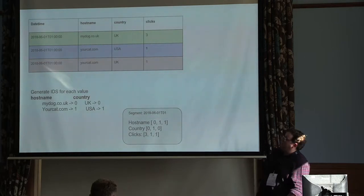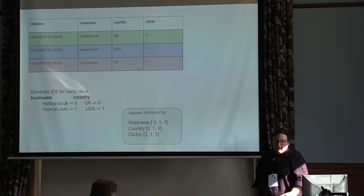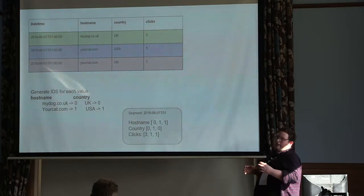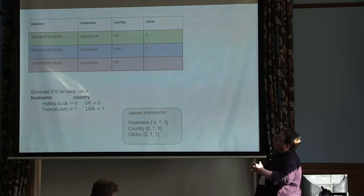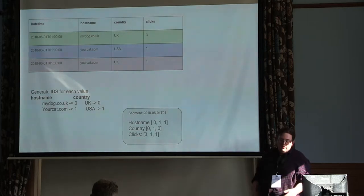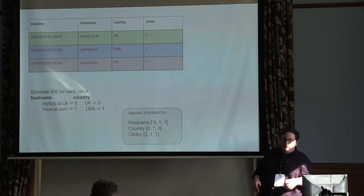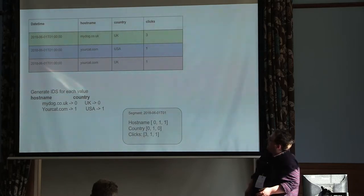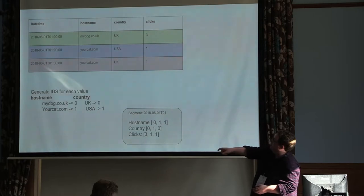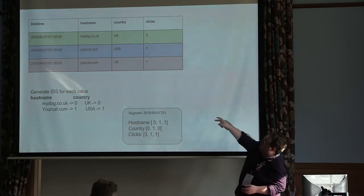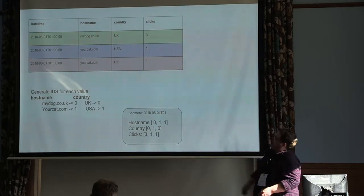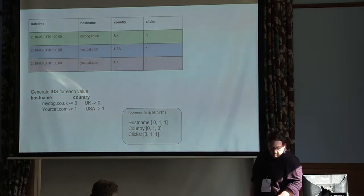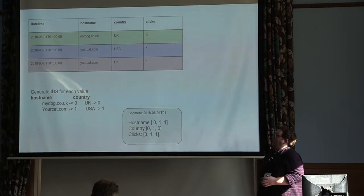Druid's underlying storage format is columnar. Segments of data are partitioned by time and stored by column. For the hostname column with two values, it maps each unique value to an ID — so mydog.co.uk maps to ID 0, yourcat.com maps to ID 1. When we store the column it's just 0, 1, 1. The same applies to other dimensions. Clicks is different because it's an aggregate — we actually store the aggregate value in those segments. This is good because it means you can have lots and lots of columns, and when you're only asking questions of two or three of those columns, it has no impact on the query.